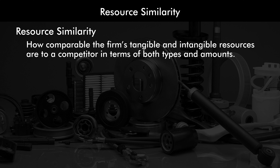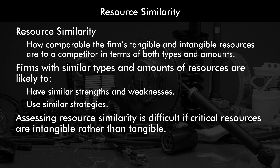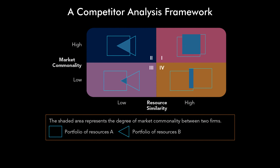Resource similarity is how comparable a firm's tangible and intangible resources are to a competitor in terms of both types and amounts. Firms with similar types and amounts of resources are likely to have similar strengths and weaknesses and use similar strategies. Assessing resource similarity can be difficult if critical resources are intangible rather than tangible. This allows us to create a competitor analysis framework with resource similarity and market commonality axes. The upper right quadrant one has the highest rivalry, while quadrant three has the lowest rivalry, and quadrants two and four are somewhere in the middle.